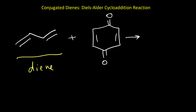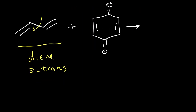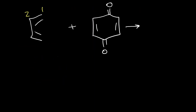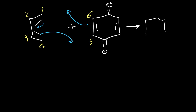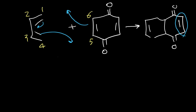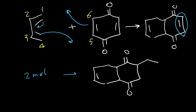Here is another example. This diene also appears to be in the S-trans conformation, but it is different from the previous example because this is a linear structure, and it can easily rotate to convert to S-cis. In the previous example, the cyclic structure did not have that ability. So this diene can easily convert to the active S-cis form. One of the double bonds in the molecule can also act as a dienophile. If we use two moles of butadiene, we can have two Diels-Alder reactions — one from the left and one from the right — giving a bicyclic product, depending on the reaction conditions.